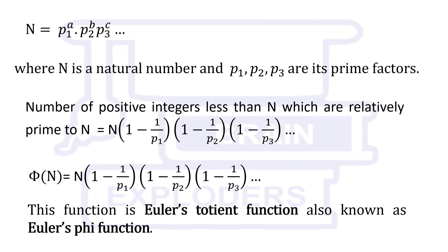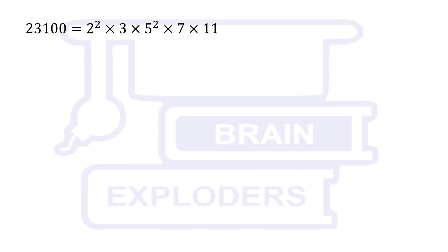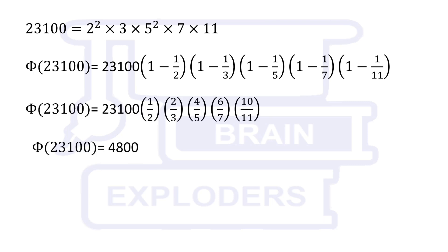Prime factors of 23,100 are 2, 3, 5, 7, and 11. Put these values in Euler's phi function. We get φ(23,100) equals 4,800 and this was our solution.